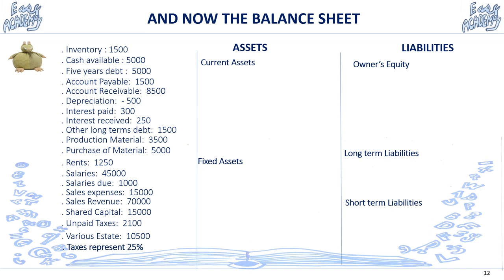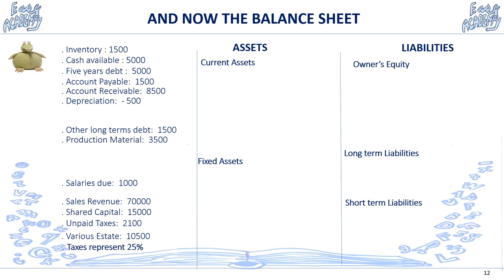Now we have set up the income statement. It's time to set up the balance sheet, beginning by withdrawing the subjects already used in the income statement: interest paid, interest received, purchase of material, rents, salaries, sales expenses, sales revenue, and taxes. Now let's work with the subjects that go into the balance sheet. The net result from the income statement is 2,400.